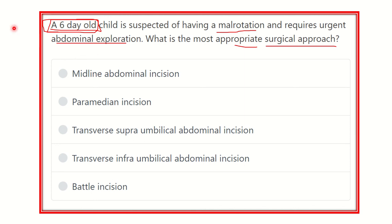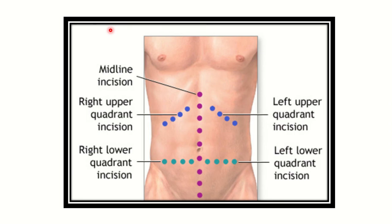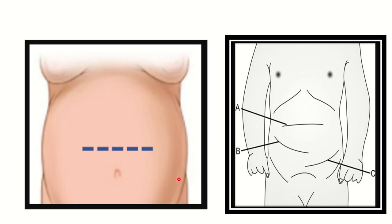Here we can see the different types of incisions. First is the midline incision, then the right upper quadrant incision, the left upper quadrant incision, and the right lower quadrant or infraumbilical incision. There is also another one — the supraumbilical incision — which can be seen in this picture.